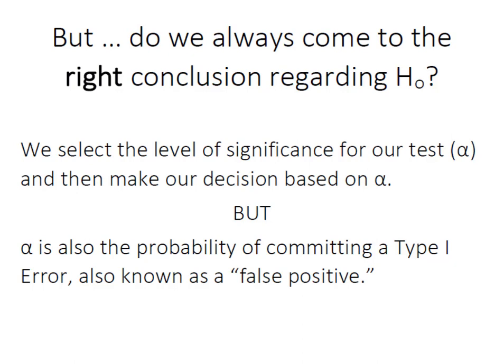When we get ready to conduct our test, we select the level of significance, alpha. And then we make our decision based on alpha. But alpha is also the probability of committing a Type I error. And Type I errors are also known as false positives.